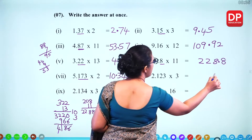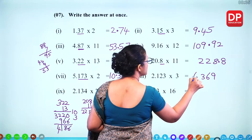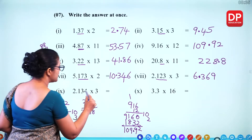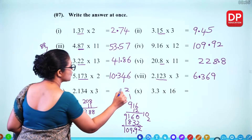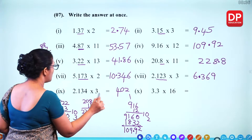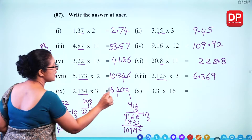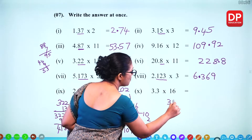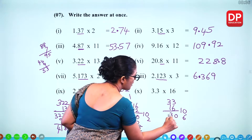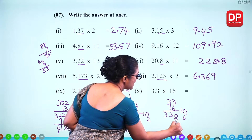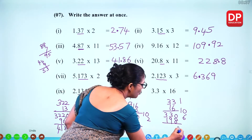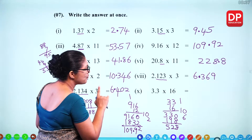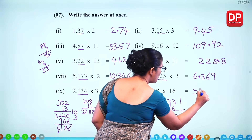For 2.134 times 3: 3 times 4 is 12 (1 remaining), 3 times 3 plus 1 is 10 (1 remaining), 3 times 1 plus 1 is 4, 3 times 2 is 6 — giving 6402. With 3 decimal places, the answer is 6.402. For 3.3 times 16: 33 multiplied by 16 — split into 10 and 6. 6 times 3 is 18, add together to get 528. With 1 decimal place, you get 52.8.